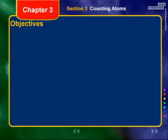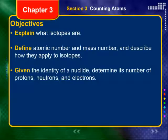The objectives for this section: I want you to be able to explain what isotopes are. In order to do that, you're going to need to define atomic number and mass number, and describe how they apply to isotopes. And lastly, given the identity of a nuclide, determine its number of protons, neutrons, and electrons.